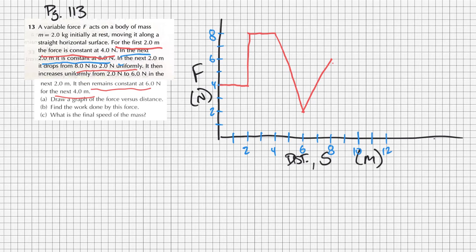So once we get to 6 meters, it's going to be this, and so it's going to be a nice uniform, linear drop. And then it increases uniformly from 2 to 6 in the next 2 meters. So 2 to 6 in the next 2 meters, that's about right there.